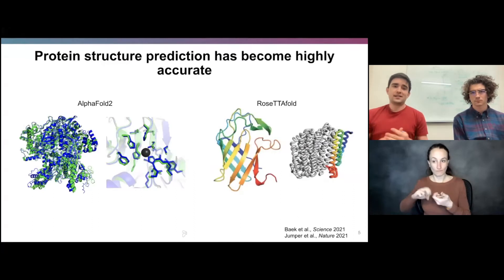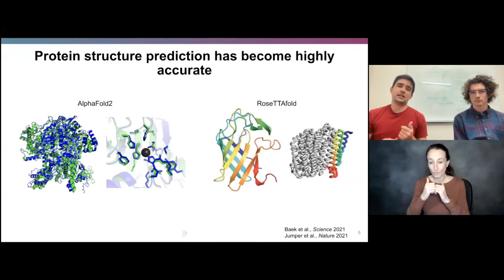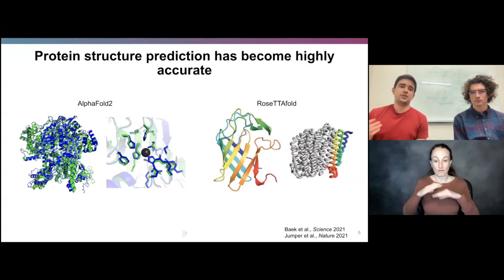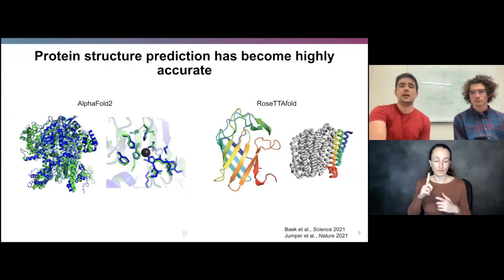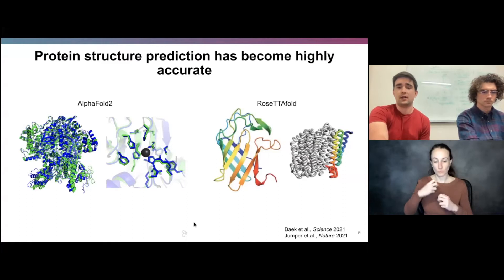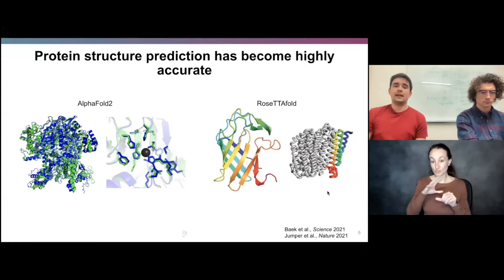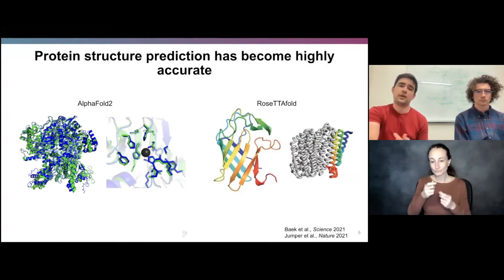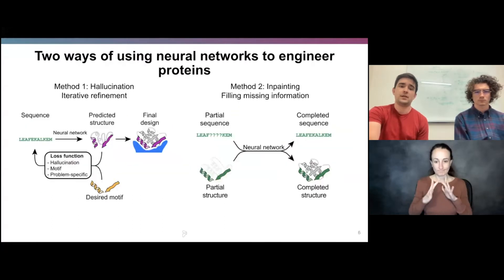By recent advances, we're probably all familiar with the success of AlphaFold 2 in the most recent CASP, as well as the RoseTTAFold network developed in the Baker lab. Both have really exceptional abilities to produce high-accuracy protein backbone structures, as well as side chain conformations and predicting protein-protein interactions. We were really interested in using these networks to help solve this protein design problem.